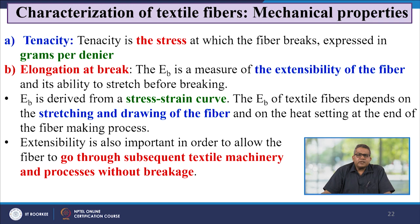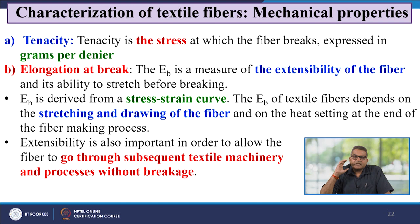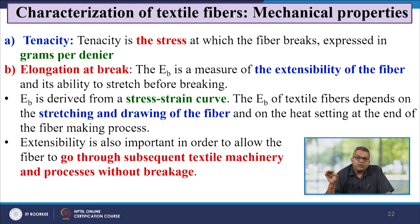Tenacity is the stress at which the fibre breaks, expressed in grams per denier. The elongation at break (EB) is a measure of the extensibility of the fibre and its ability to stretch before breaking. The EB is derived from the stress-strain curve and depends on the stretching and drawing of the fibre and on the heat setting at the end of the fibre-making process. Extensibility is also important to allow the fibre to go through subsequent textile machinery without breakage.